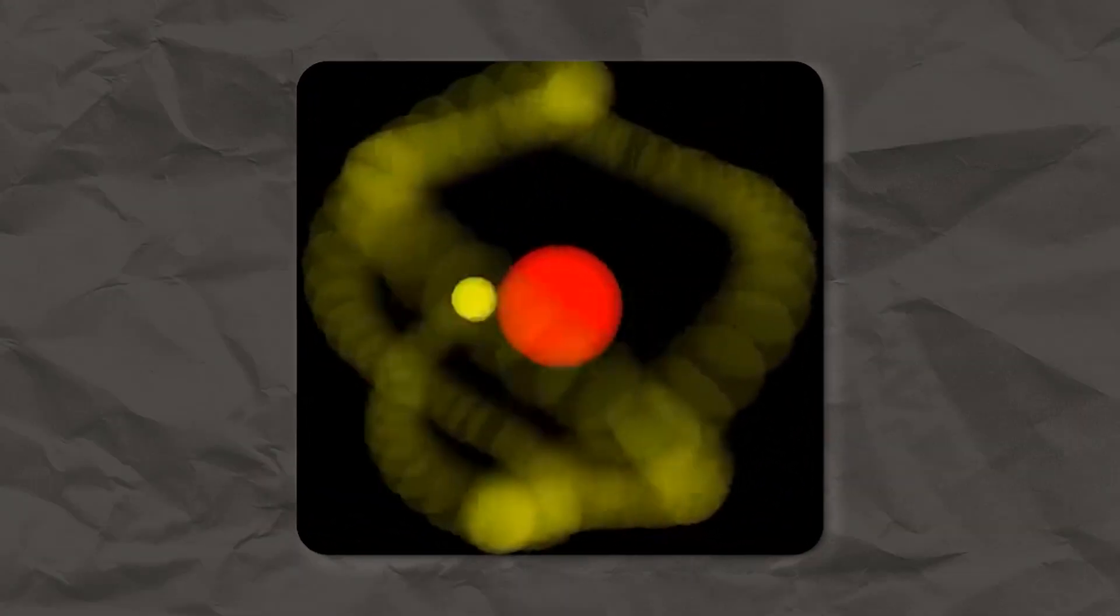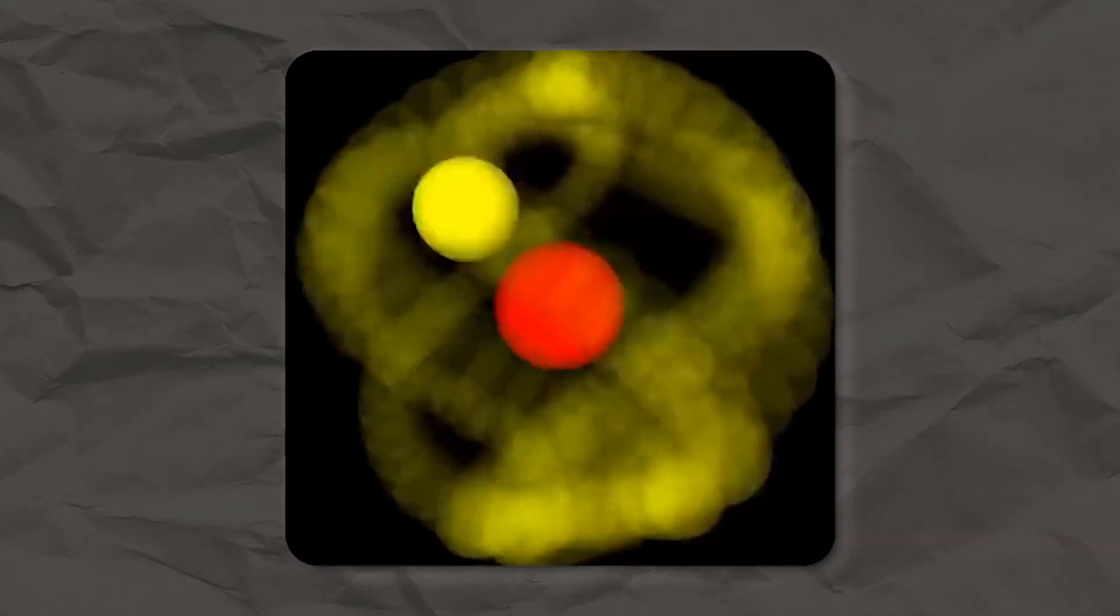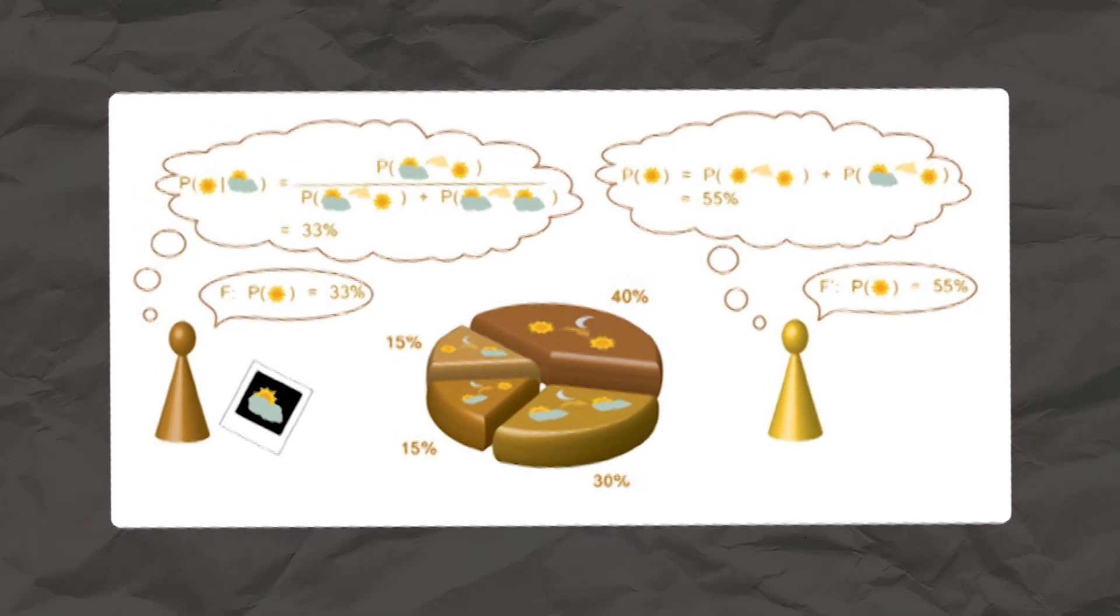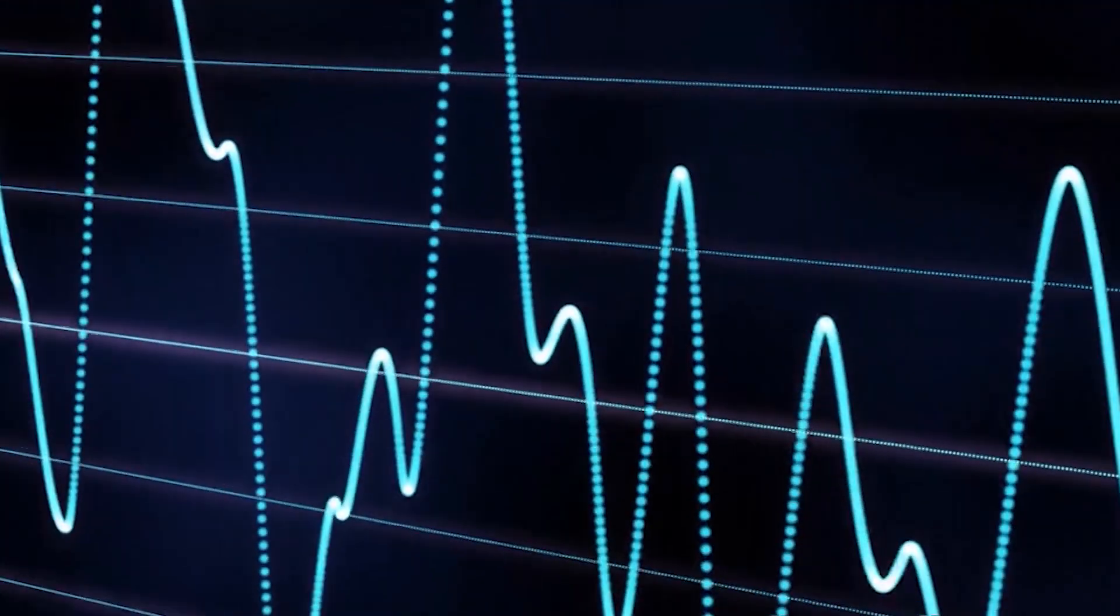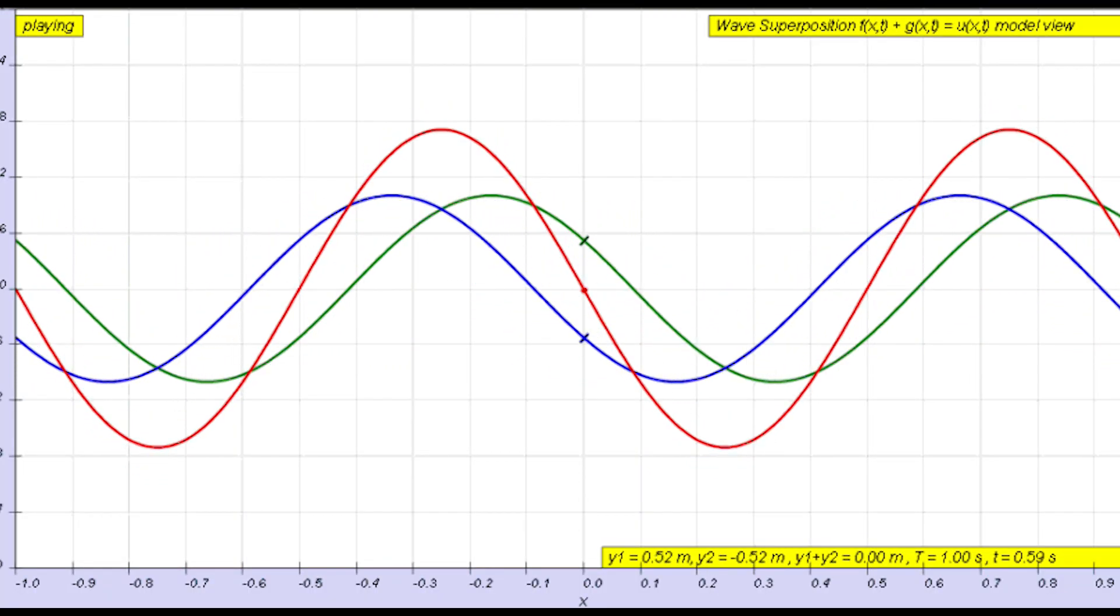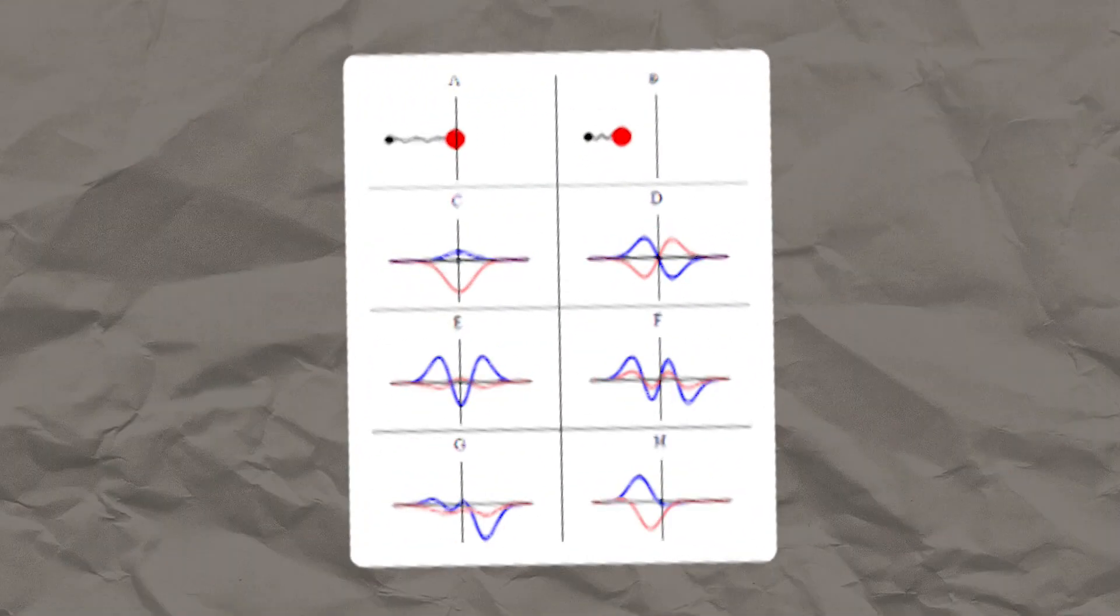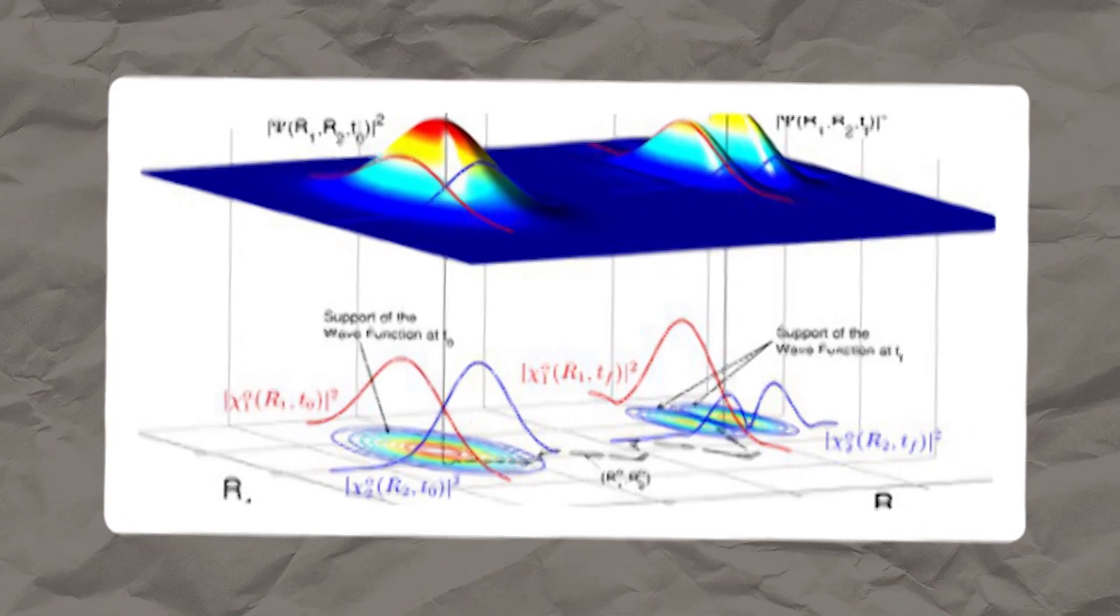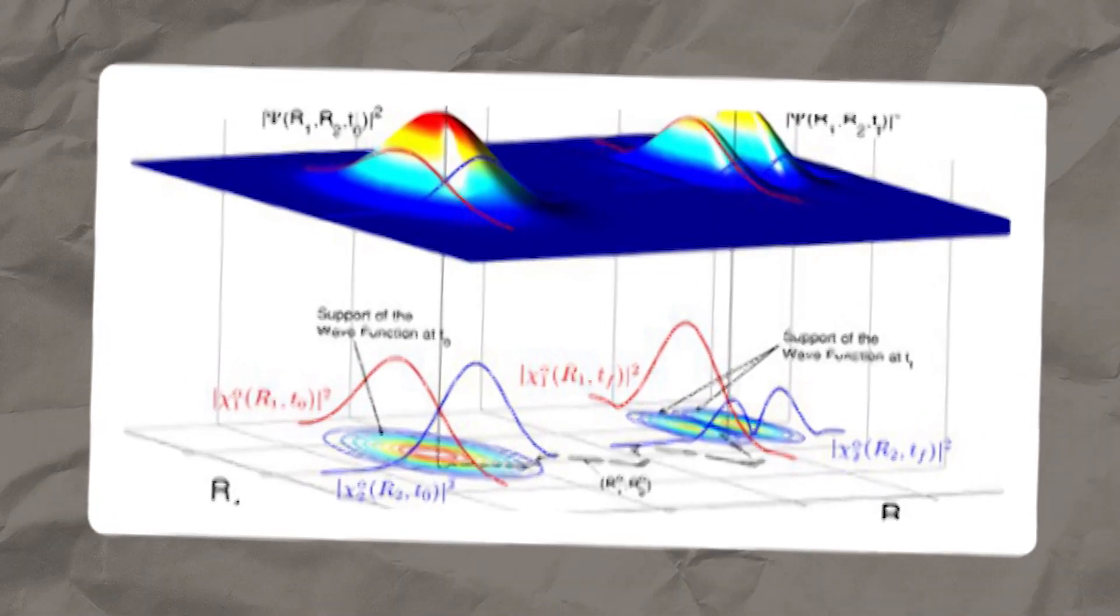At the core of quantum mechanics lies the wave function, a mathematical abstraction that encapsulates the probabilities of finding a particle in a particular state. This wave function doesn't provide a clear-cut picture of where a particle is or what it's doing, instead, it offers a spectrum of possibilities that only coalesce into certainty when we measure them. This is the principle of superposition, where particles can exist in a blend of states simultaneously, like a ghostly cloud of potential that only materializes into a solid reality upon observation.